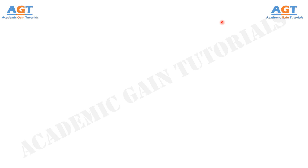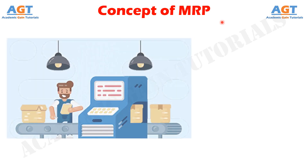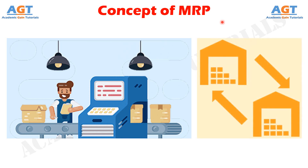Material requirements planning is basically concerned with the inventory of raw materials and components which are required to produce the products in a facility. The demand for raw materials and components is termed as secondary demand, which is essentially depending upon the demand for the finished products.